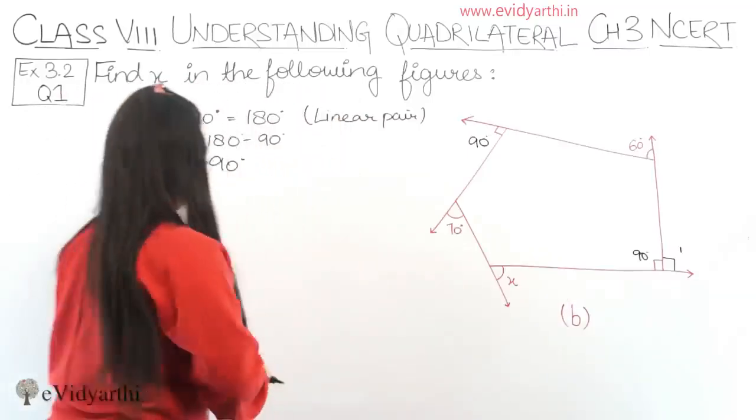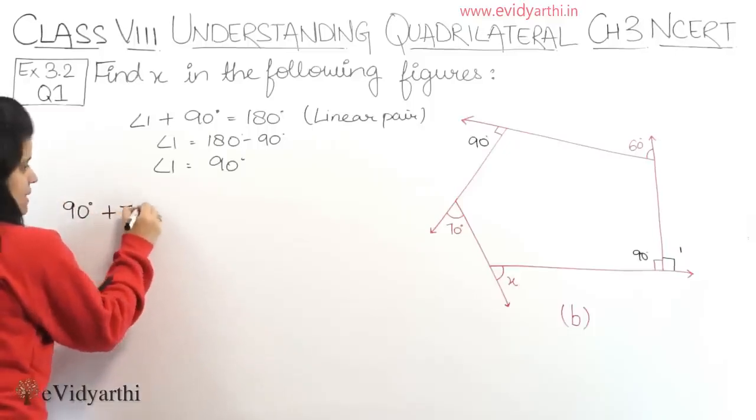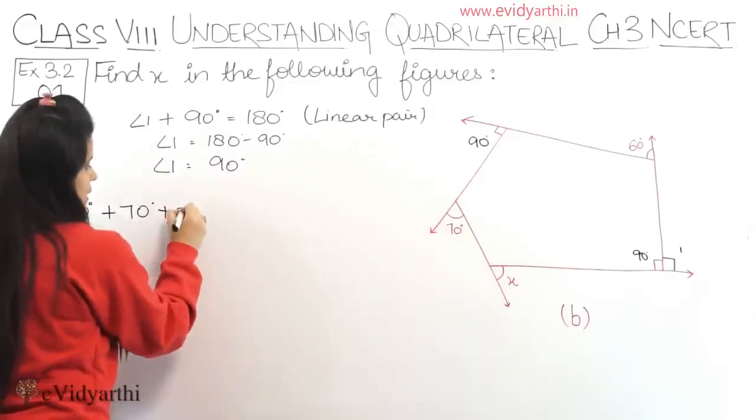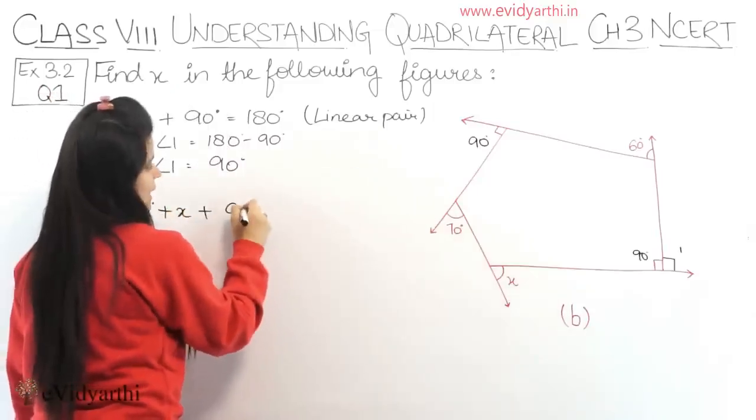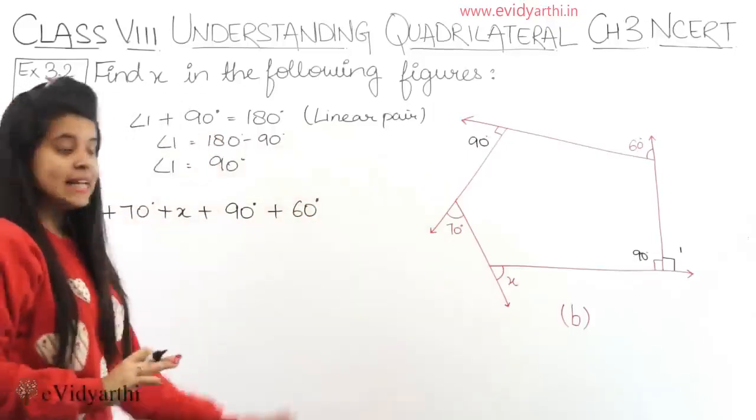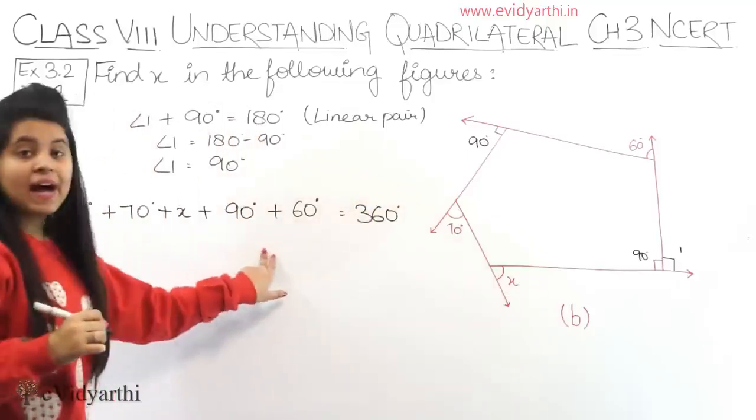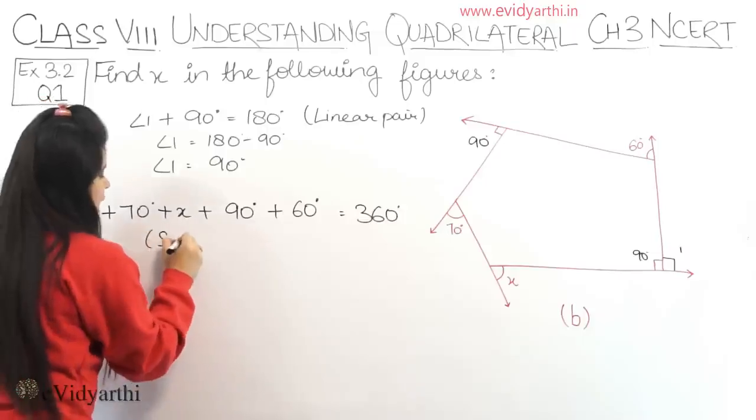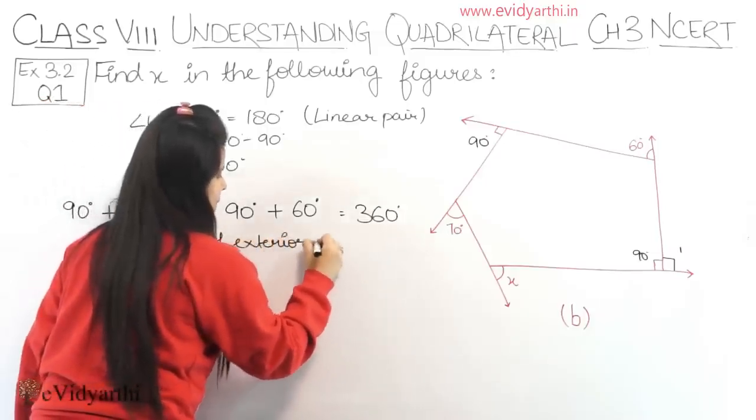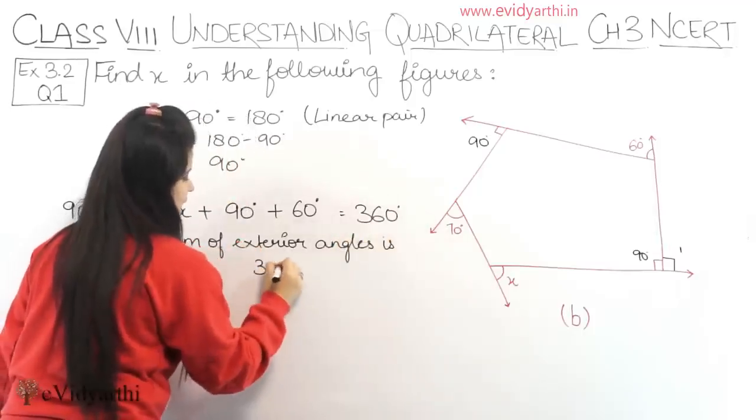We have to find x. So 90 degrees plus 70 degrees, I'll start from here: 90 plus 70 plus x plus angle 1 which is 90 again plus 60 degrees. All these are exterior angles, so this will be equal to 360 degrees. Why? Because sum of exterior angles is 360 degrees.